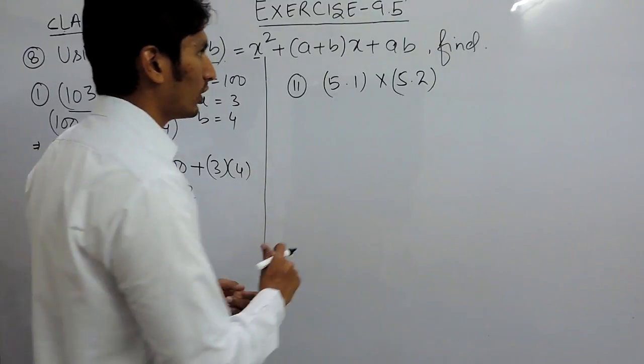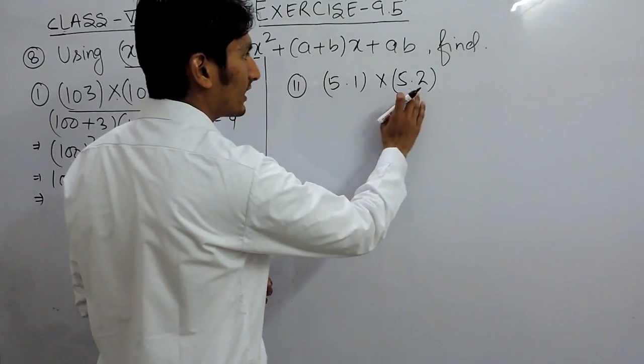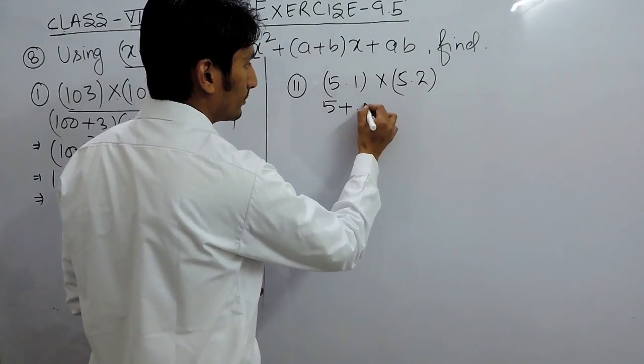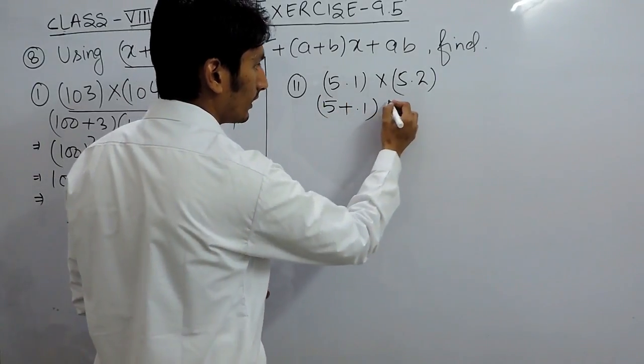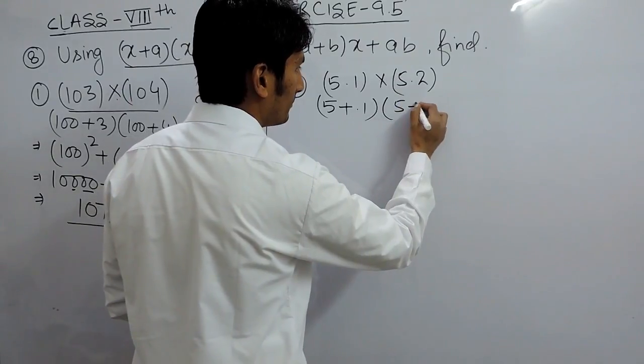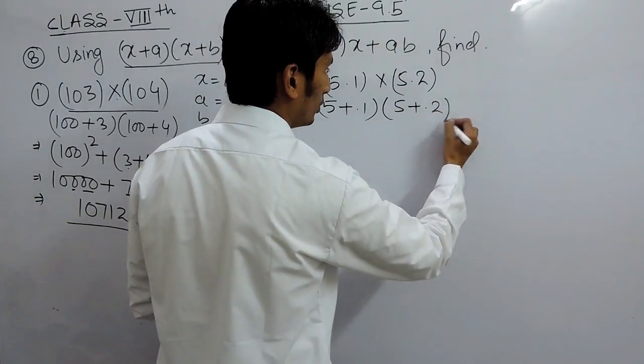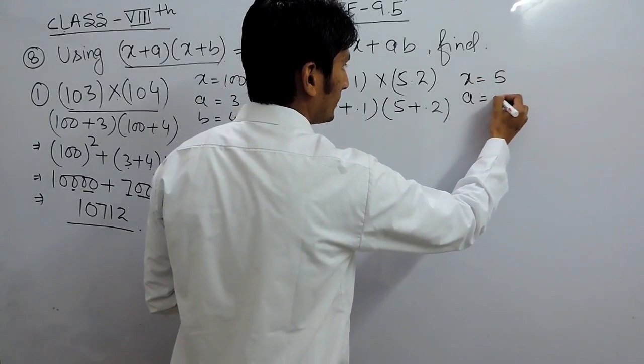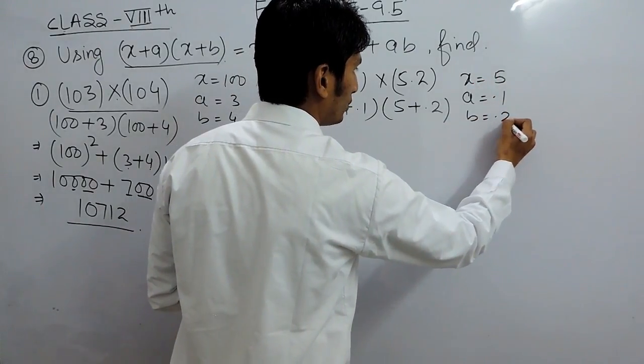Similarly, if I have to solve this, again these two numbers are close to 5. So, this can be written as 5 plus 0.1 and this can be written as 5 plus 0.2. So, our x will be 5, a will be 0.1 and b will be 0.2.